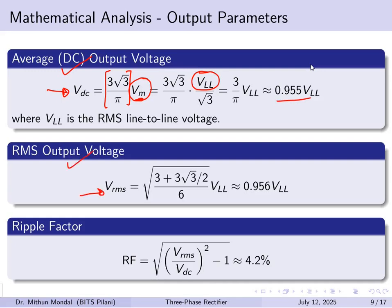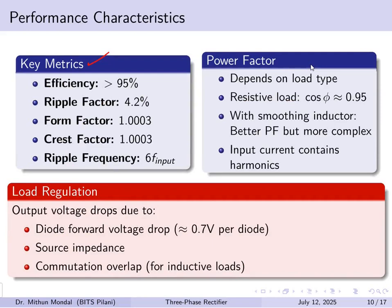The RMS output voltage Vrms is 0.956 times the RMS line voltage. The ripple factor, calculated from the RMS and DC values, is 4.2%. Key performance characteristics include efficiency greater than 95%, a ripple factor of 4.2%, and form factor and crest factor both close to 1. The ripple frequency is six times the input frequency. The power factor depends on the load type — close to 1 for a resistive load and better with a smoothing inductor. The input current contains harmonics.